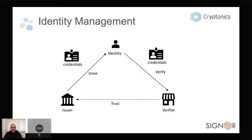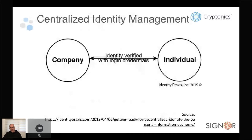That identity triangle doesn't go away when we talk about self-sovereign identity. It's still important to realize there's a trust relationship between the verifier and the issuer. The early and most well-known way of dealing with identities on the internet is centralized identity management — a company issues a credential and creates an identity for a user, like a username and password on a server. The problems are obvious: we have many different identities for many different services, the company stores our passwords and data, and we have to trust that centralized source.